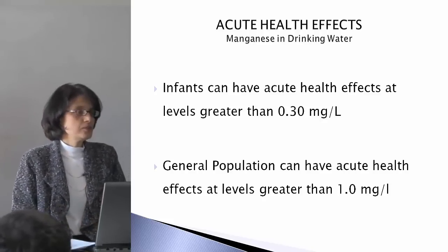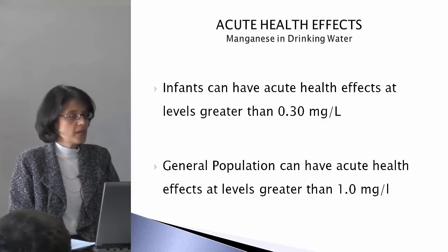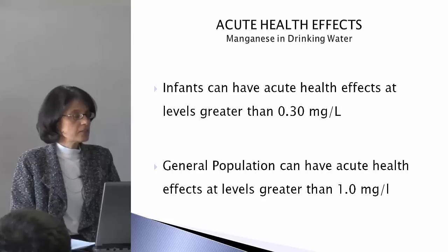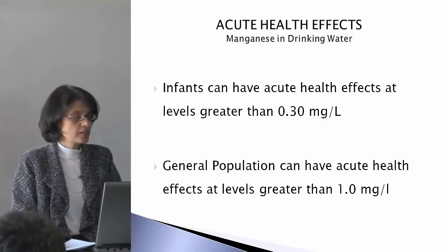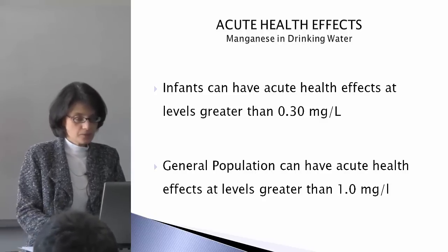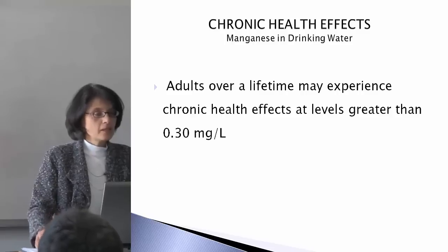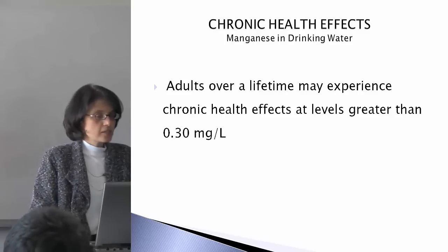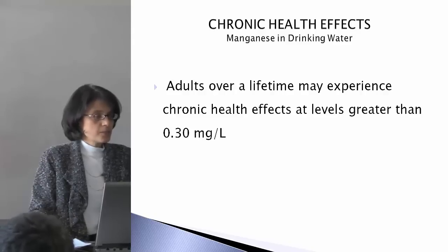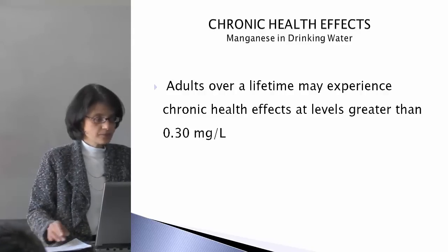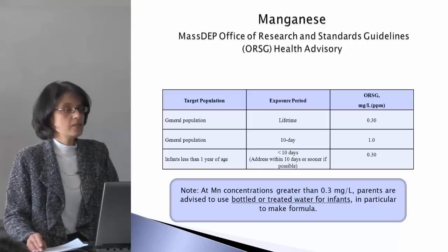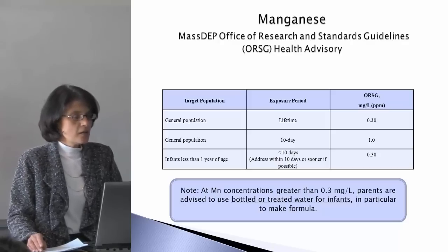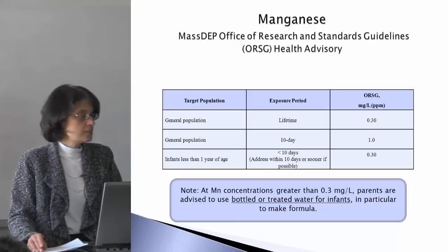In terms of acute exposure health effects, besides infants having acute health effects if the levels are greater than 0.3, the general population can have acute health effects at levels greater than 1.0 milligrams per liter. And then there are chronic exposure health effects. Adults over a lifetime may experience chronic health effects with levels over 0.3 milligrams per liter. The MassDEP Office of Research and Standards set the ORSG based on three target populations: the general population and the infant population.